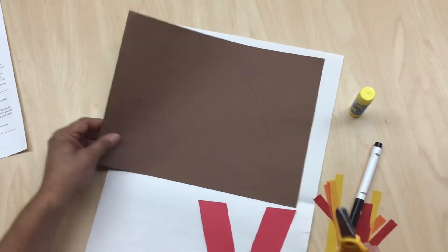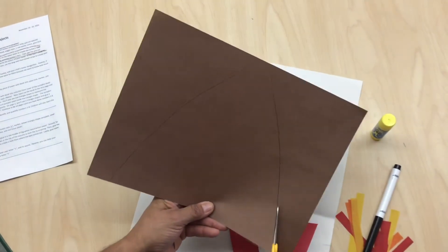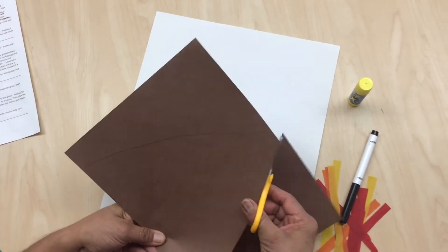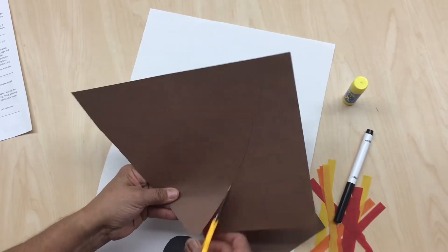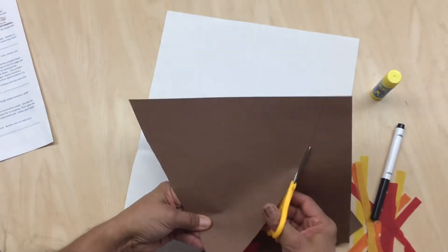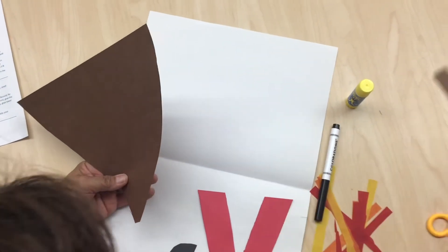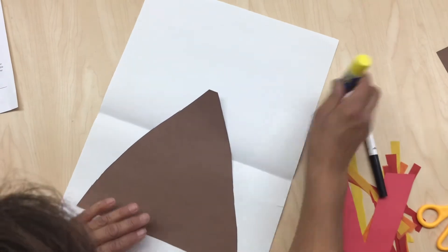I forgot to mention scissors because I'm gonna need it to cut my brown triangle. This triangle is gonna be my volcano, and once I cut my volcano I am gonna glue it on the center.